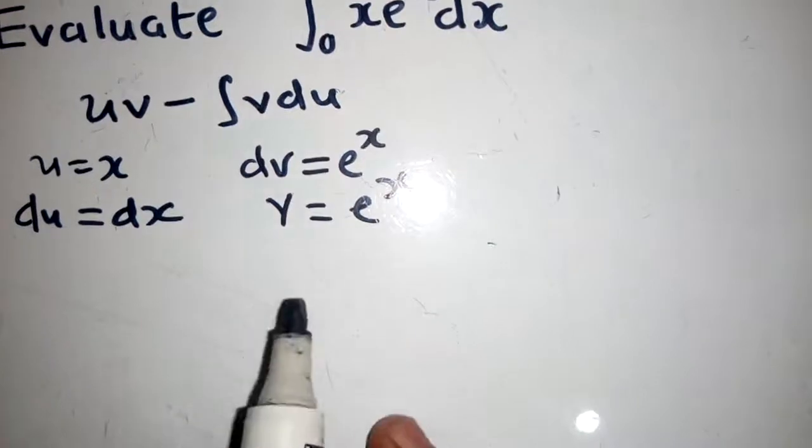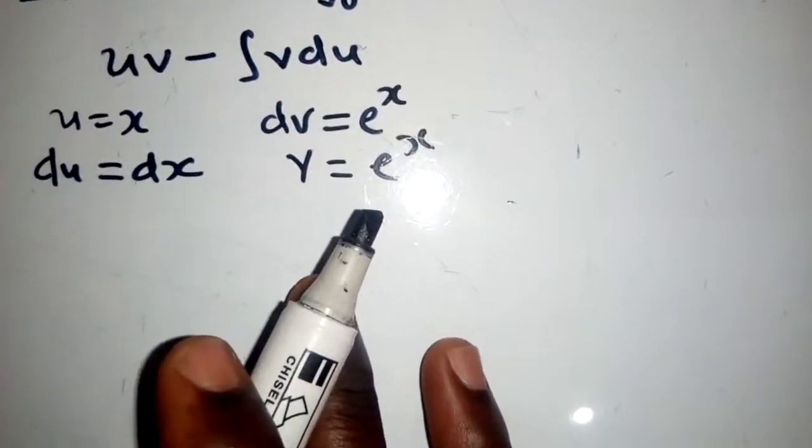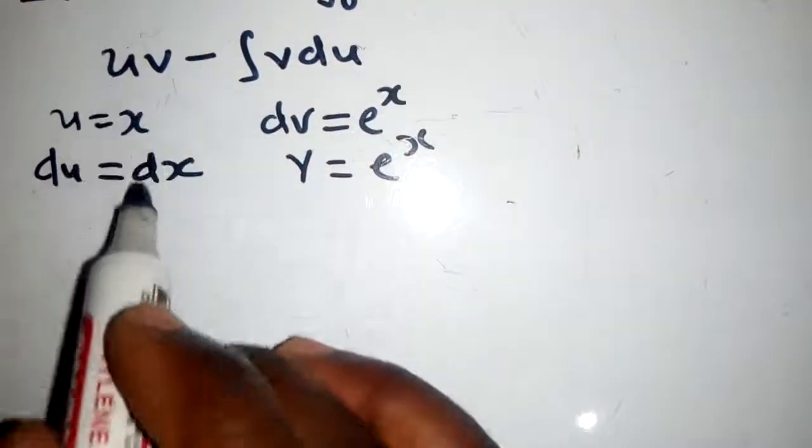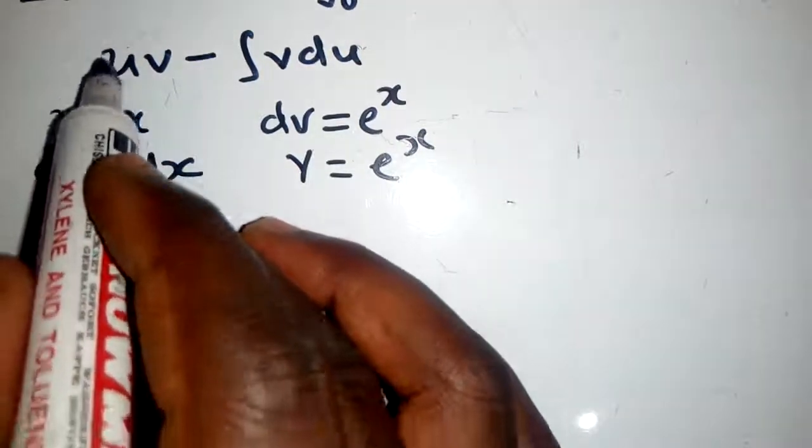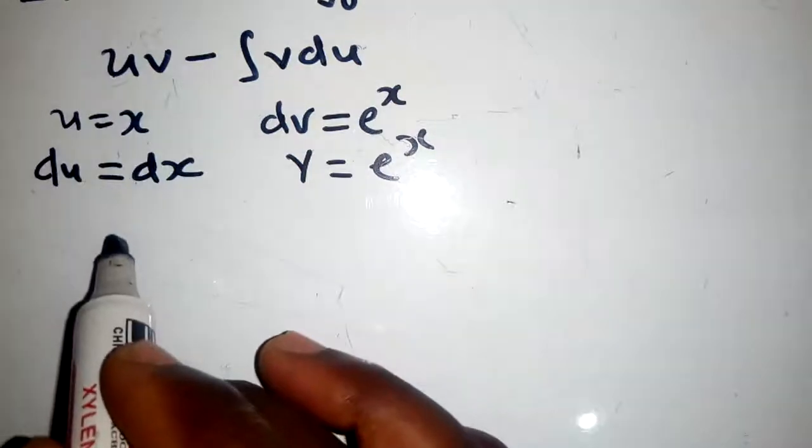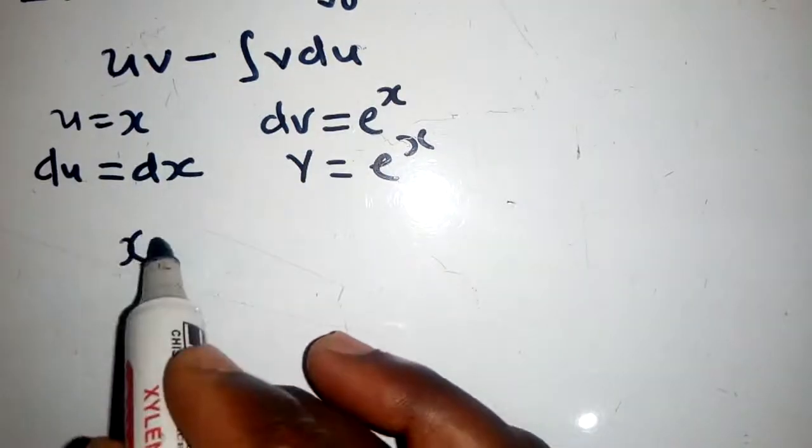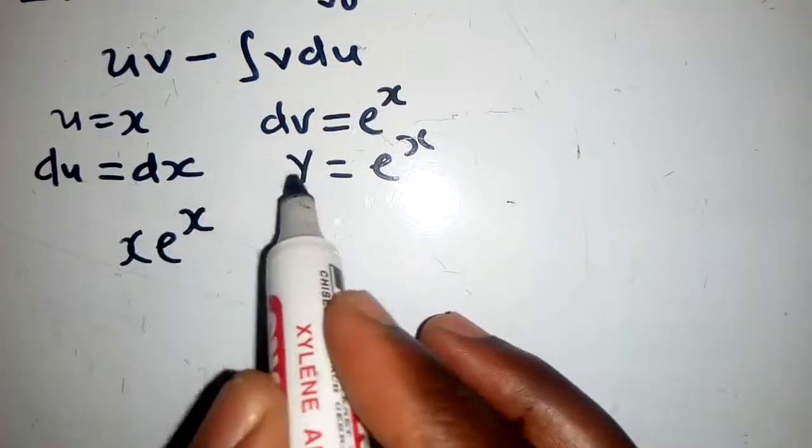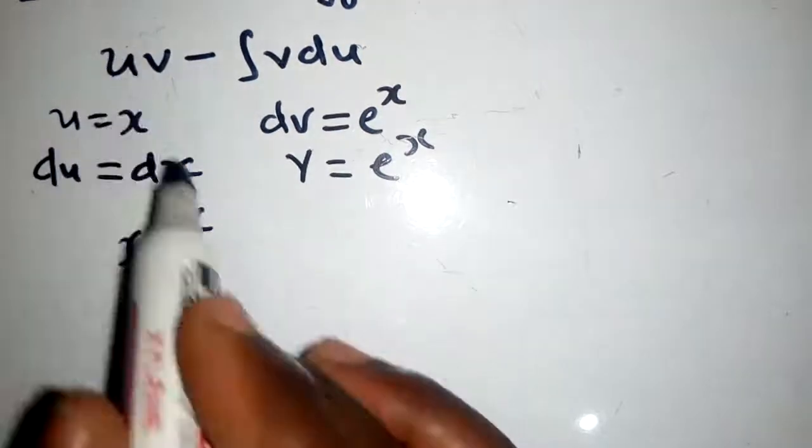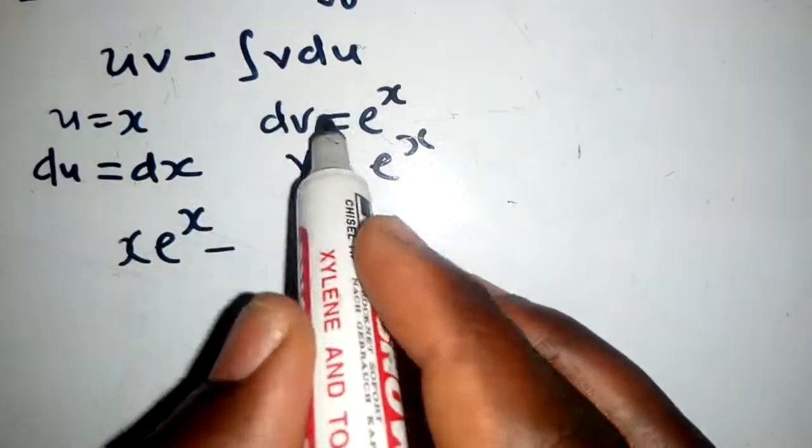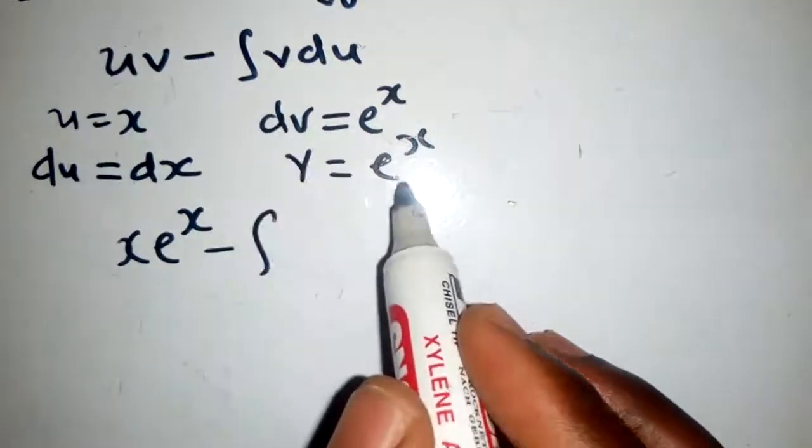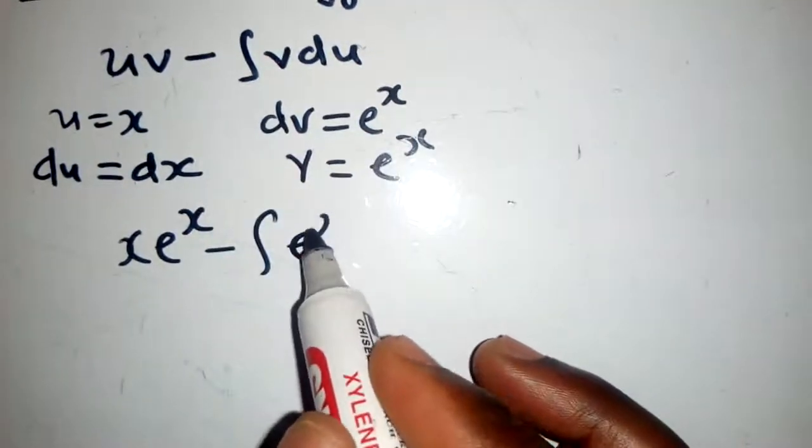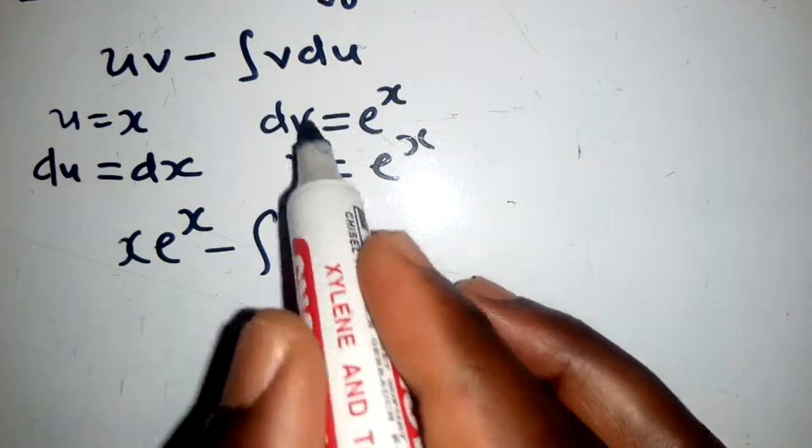After finding these values, we can plug them in here. So plugging them in, what is our u? Our u is x, then v will be e to the power x. So we put them here, then the integral sign here, then we put e to the power x as our v, du.